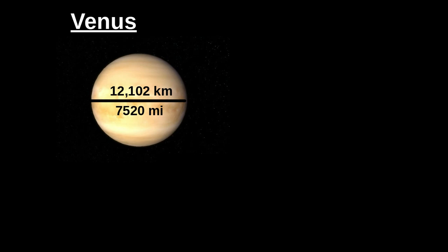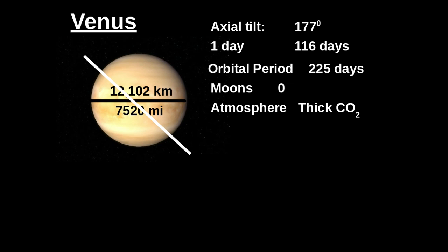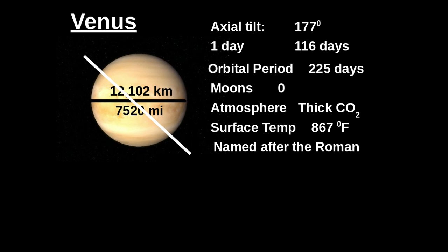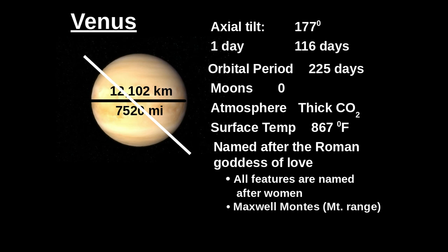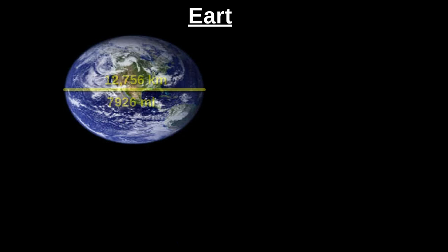Venus is a close relative to Earth with respect to size — about 7,500 miles across. Axial tilt is 177 degrees. One day is 116 Earth days. Orbital period is 225 days. No moons. Atmosphere is a thick atmosphere of carbon dioxide. Surface temperatures are about 867 degrees Fahrenheit — you can certainly thank the greenhouse effect with that thick carbon dioxide for the high surface temperatures. Named after the Roman god of love, all features are named after women. Maxwell Montes is a mountain range — coined as the only man on Venus. Venus is 67 million miles from the sun.